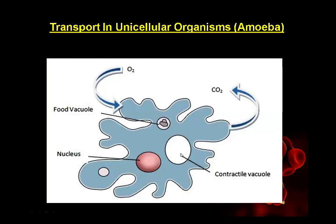The excretion process in unicellular organisms takes place by the body surface. There is a contractile vacuole - when it is filled with waste material it comes very close to the cell membrane and bursts, releasing excretory material outside the body. Then the vacuole membrane reforms and goes back inside, and the cell membrane repairs.